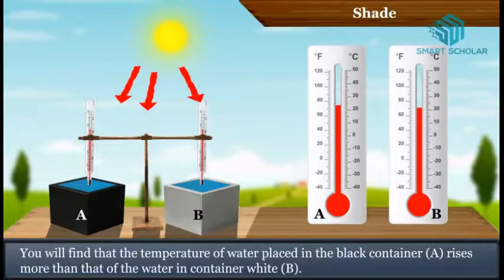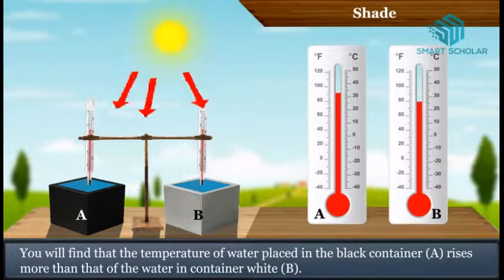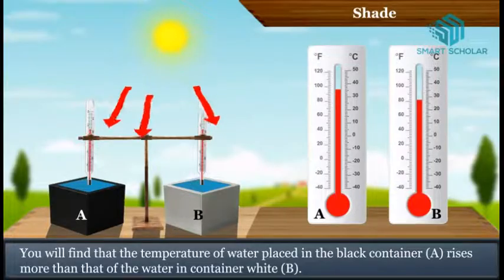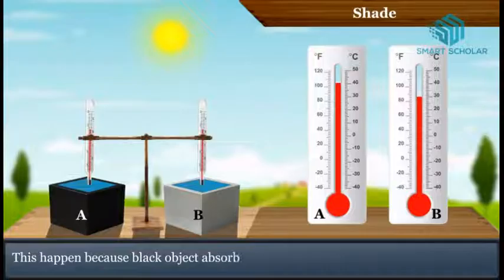You will find that the temperature of water placed in the black container rises more than that of the water in the white container. This happens because black objects absorb more radiant heat than white objects.